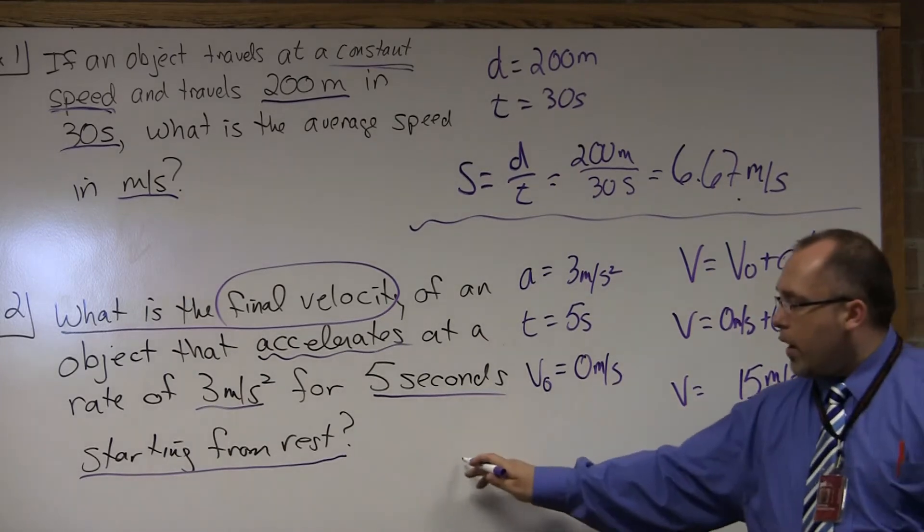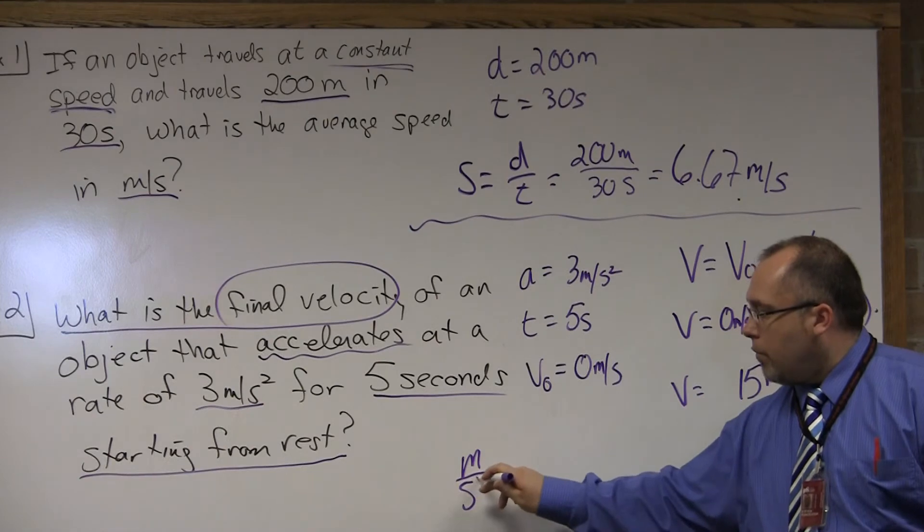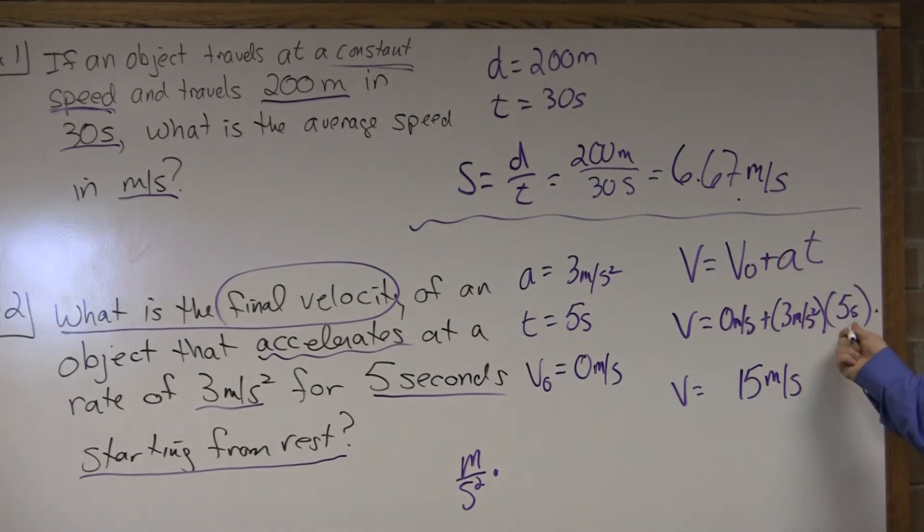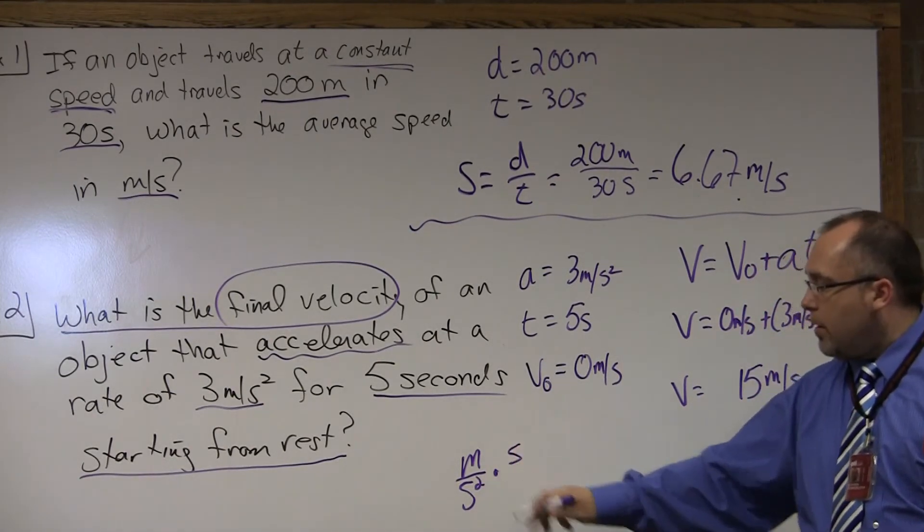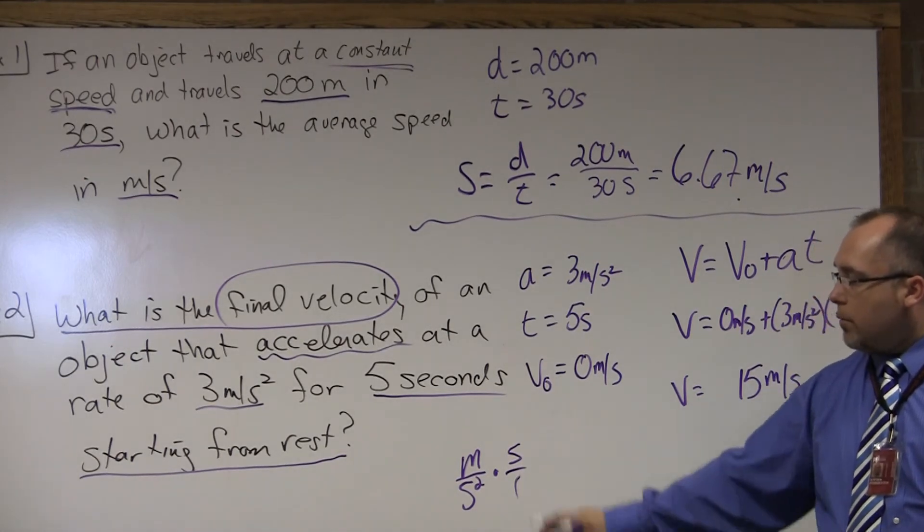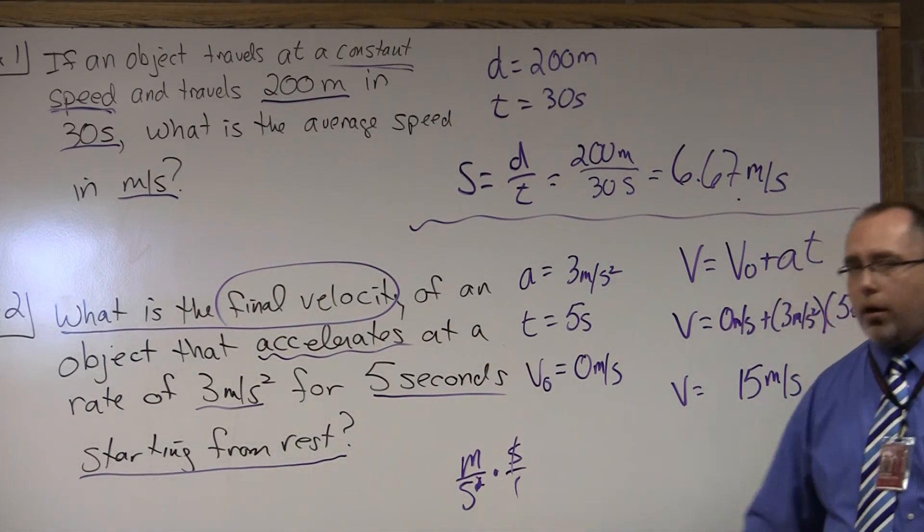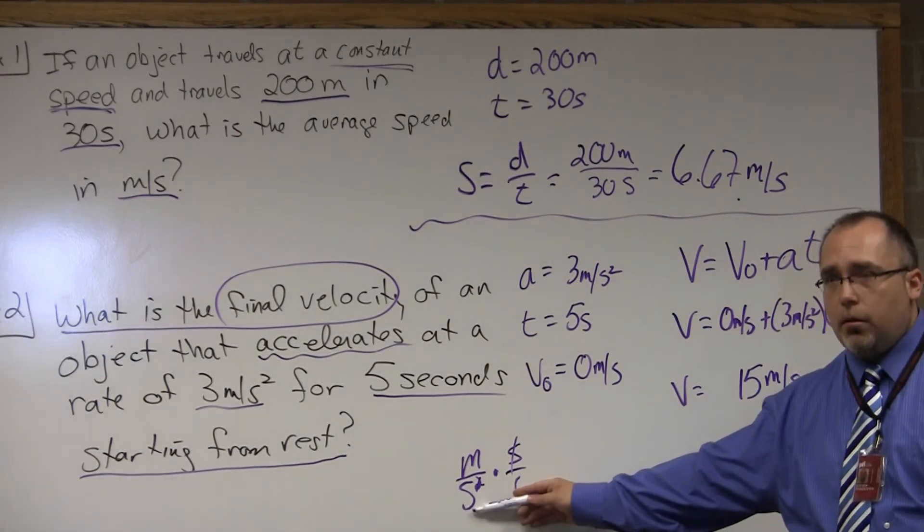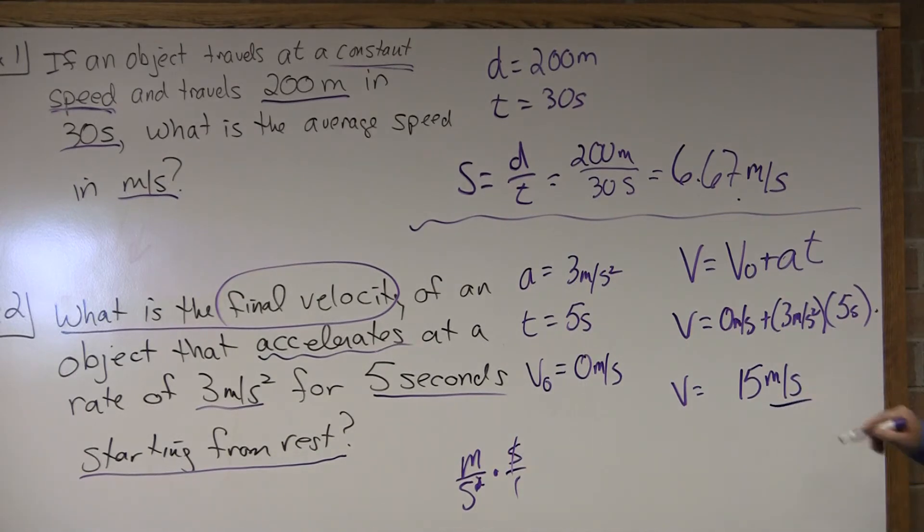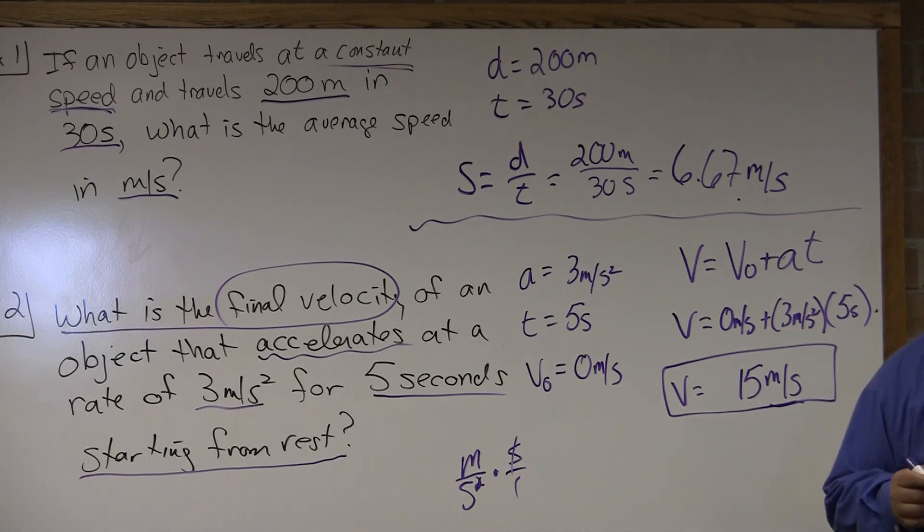We take something in meters per second squared. Times time which is measured in seconds. Think of that seconds as over 1. That 1 second cancels out with 1 on the bottom. Still leaving 1. So, your end unit is indeed meters per second. And it does match up with the quantity that you're solving for, which is velocity. So, the answer to that one is simply 15 meters per second.